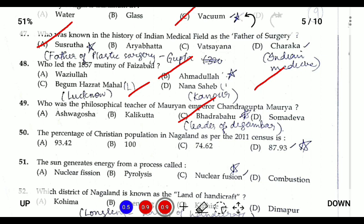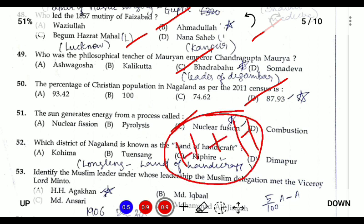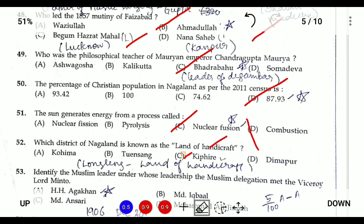Question fifty: the percentage of Christian population in Nagaland is 87.93 percent. Question fifty-one: the Sun generates energy through nuclear fusion — hydrogen atoms in the Sun combine to form helium, releasing a large amount of energy. This process of combining two smaller atoms to form a heavier atom is known as nuclear fusion.